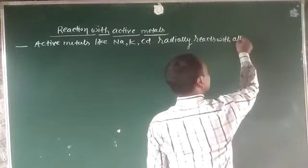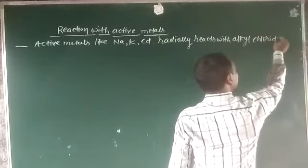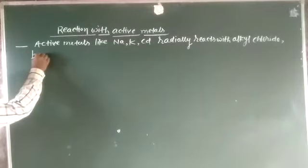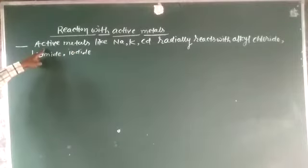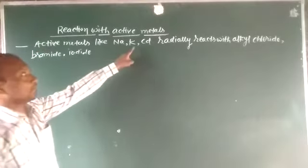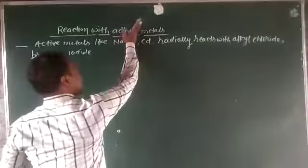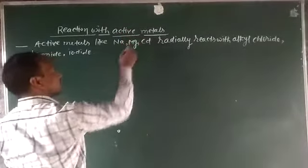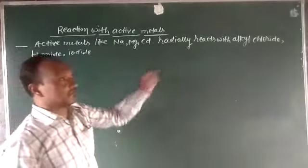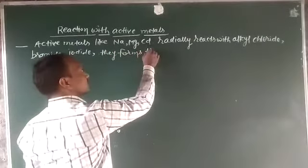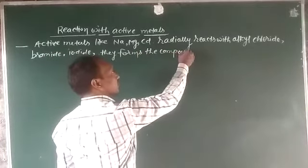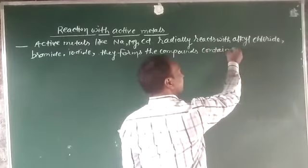Active metals like sodium, potassium, and cadmium react with alkyl chloride, bromide, and iodide. They form compounds containing a carbon and metal bond.